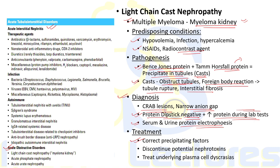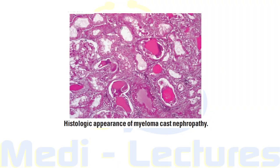Diagnosis of myeloma kidney is highly suggestive when protein dipstick (which measures only albumin) is negative but lab urine protein measurement is very high. Confirmation requires serum and urine protein electrophoresis. Treatment involves correcting precipitating factors like hypovolemia and infections, discontinuing nephrotoxins such as NSAIDs and radiocontrast agents, and treating the underlying plasma cell dyscrasia. A biopsy image shows atrophic tubules filled with eosinophilic casts of Bence Jones and Tamm-Horsfall protein, surrounded by giant cell reactions and interstitial fibrosis.